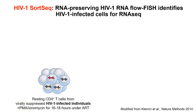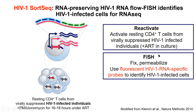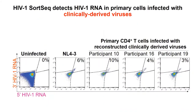This method is called HIV RNA FISH-seq. We use an RNA-preserving method to identify HIV-infected cells from infected individuals under suppressive antiretroviral therapy. Briefly, we take resting CD4 T cells from patients under antiretroviral therapy and activate them with PMA/ionomycin for 16 to 18 hours in the presence of ART to induce RNA production. Once they have RNA production, we fix and permeabilize them for in situ hybridization using 96 probes targeting 5' HIV and another 96 probes targeting 3' HIV. We can visualize these cells and sort them out for single-cell RNA-seq using a flow cytometer, identifying cells positive for both 5' and 3' HIV RNA.